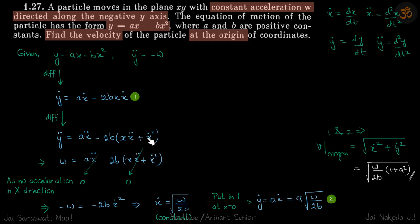We have a constant acceleration along the negative y-axis, so let's call it minus w. The trajectory is given as y equals ax minus bx squared. We need to find the velocity of the particle at the origin. y is given and y double dot is given, so let's try to get y double dot by differentiating twice.